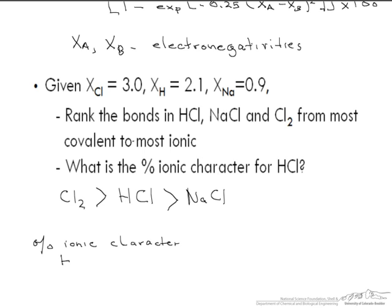However, let's look now at HCl, and this is going to be equal to 1 minus the exponential of negative 0.25 times 0.9 squared times 100.